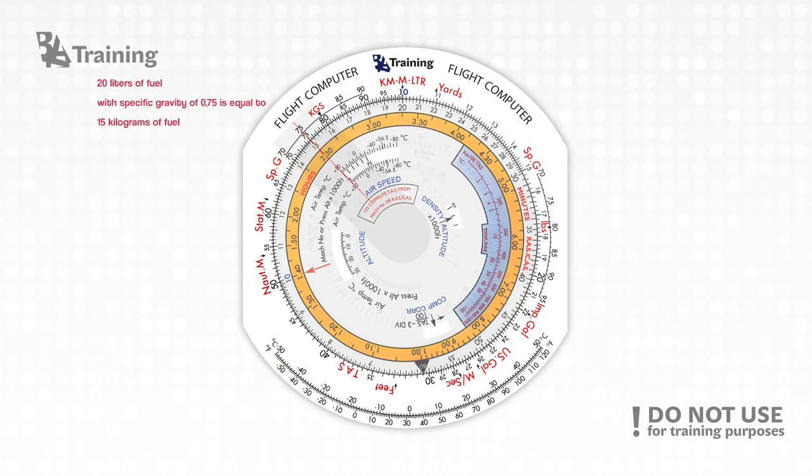If we desire to convert the same 20 liters of fuel with specific gravity of 0.75 to pounds, we have to rotate the cursor through 0.75 on the specific gravity scale, and we can read that it is approximately equal to 33 pounds of fuel.